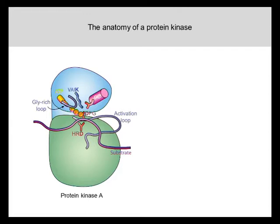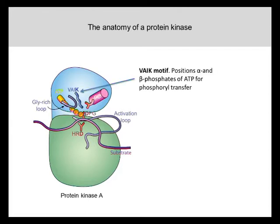When thinking about pseudokinases, it's useful to start by considering the anatomy of an active protein kinase — specifically protein kinase A. There are three key catalytic motifs present in active protein kinases: the VAIK motif, the DFG motif, and the HRD motif, each with a specific function.